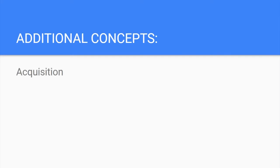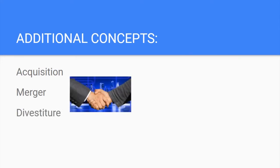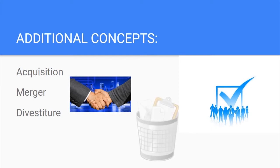Some additional concepts you need to be aware of are Acquisition, Merger, and Divestiture. Acquisition is when a company purchases another to become one of its subsidiaries. Merger is when two companies are combined into one. Divestiture is when a company cedes or gives up control of one of its subsidiaries. If you're not familiar with these terms, you should read up on them and how they impact security.